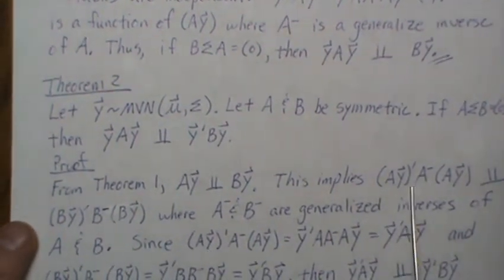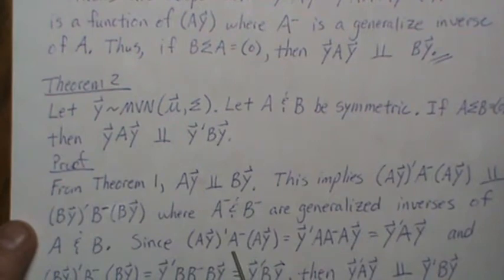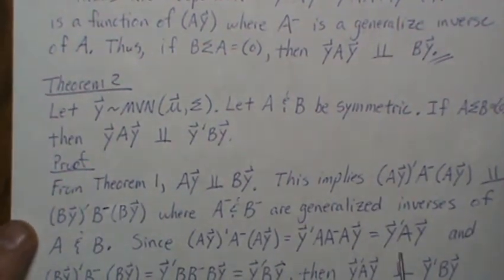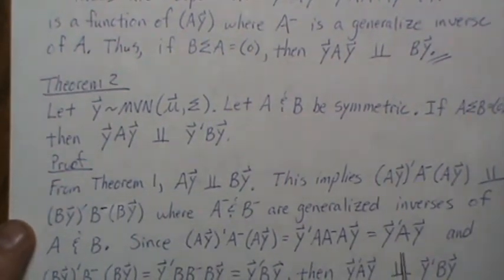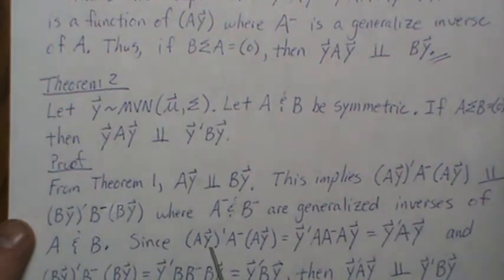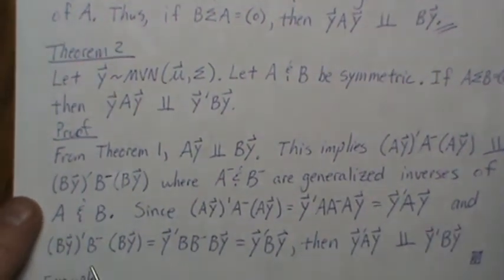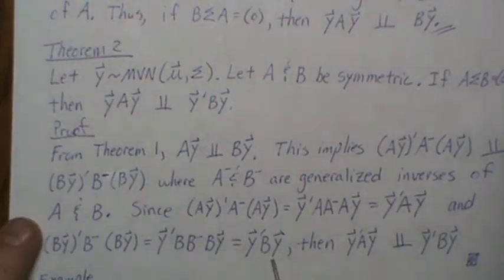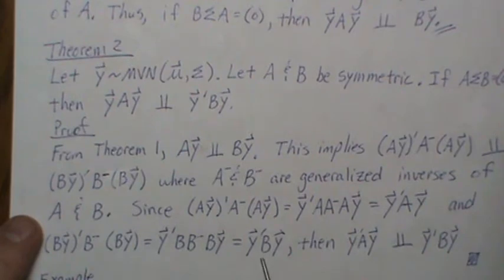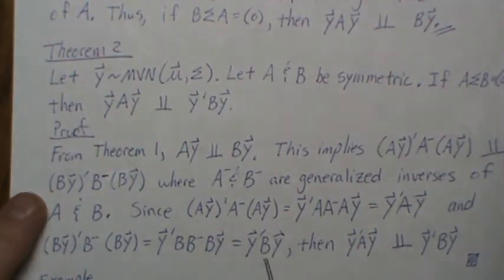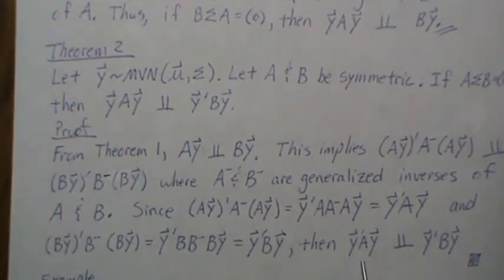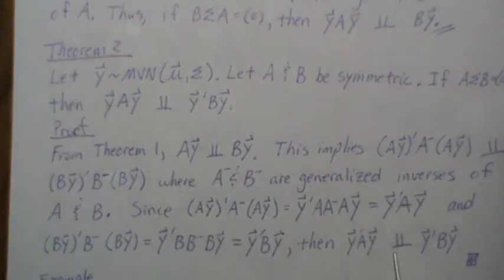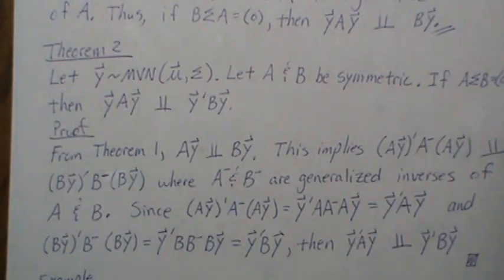But since this function of A'Y actually is the quadratic form Y'AY, we just undo it like we did in the first proof. And this function of B'Y, when undone, is actually just the quadratic form Y'BY. So that implies this quadratic form is independent of this quadratic form, and then we're finished.